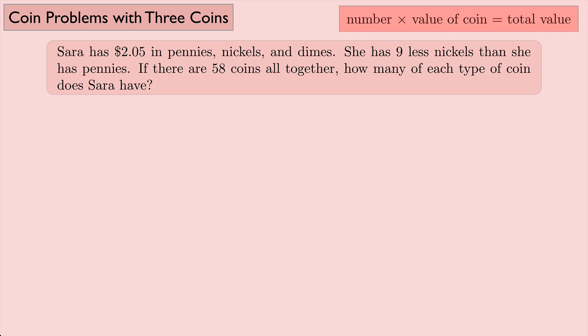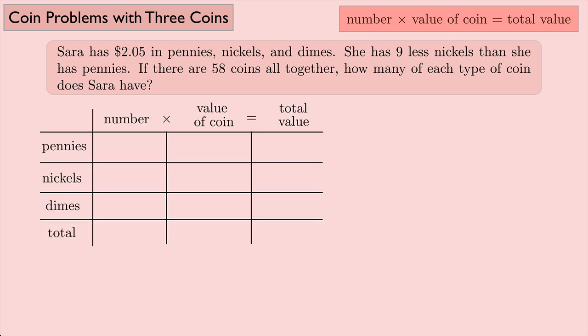We're going to make a chart. In this chart we're going to have pennies, nickels, and dimes, and then we have a total. We're also going to let P be the number of pennies, N the number of nickels, and D the number of dimes.